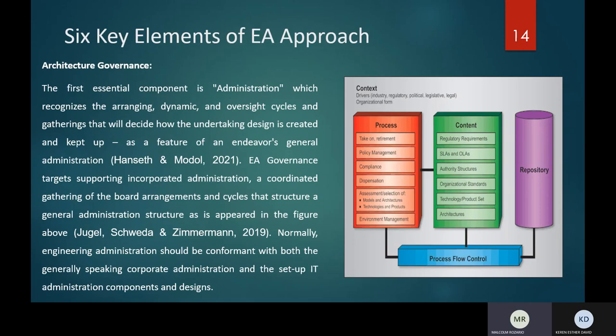Enterprise architecture has six key elements that aid in the analysis and design of successful enterprise architecture. The first is architectural governance, which is the oversight board. This individual or group builds up the arrangement and ensures that the rest of the group stays on track. This individual ensures that the goals set by the group align with the general objectives of the organization and fit within the current IT foundation.